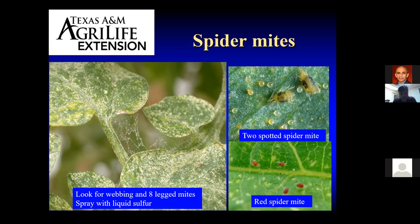Since mites are not insects, we don't use insecticides to control them — we use miticides. Most miticides have been taken off the market for homeowners, so what we're left with is liquid sulfur. Sulfur is very effective on mites on any crop. Some tomato varieties are sensitive to sulfur, but in my experience I've never seen any phytotoxic effects from using sulfur on tomatoes. You want to get good coverage and do repeated applications to get your mite problem under control.